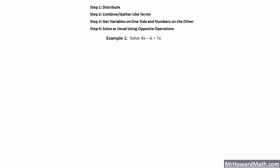Let's take a look at this first example. We have example 1: solve 4x minus 6 equals 7x. We are actually going to work this in two different ways, and that will cover example 1 and example 2. In example 1, I'm going to use the method I teach my students as the best way. It's always easier when we have variables on both sides if we keep our variable term positive when we're done.